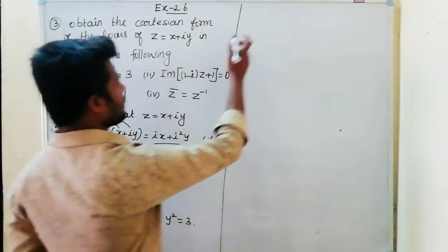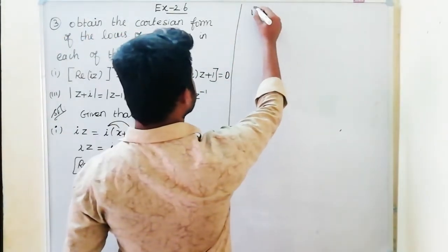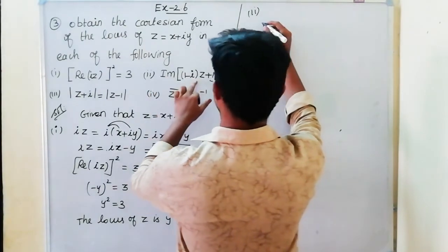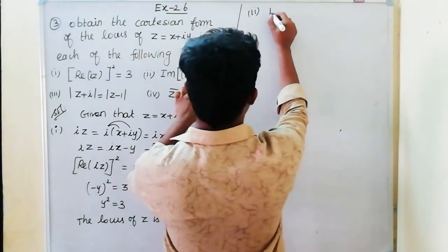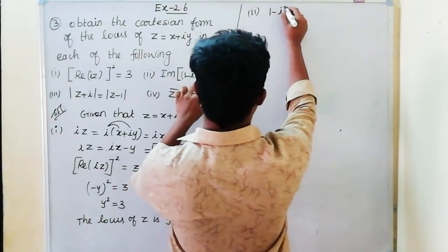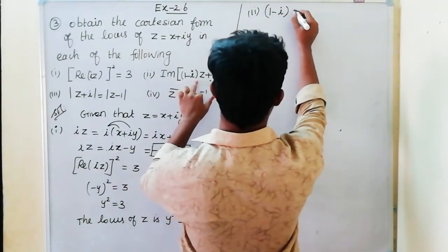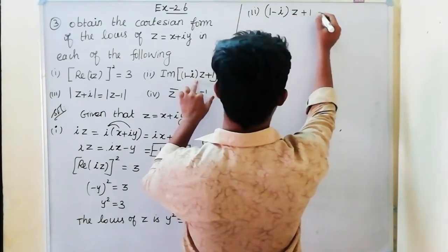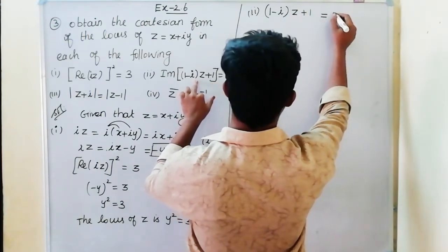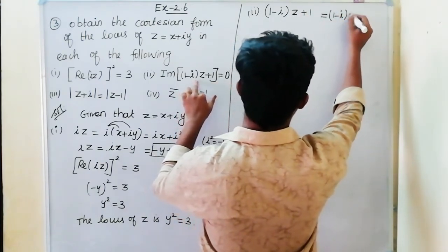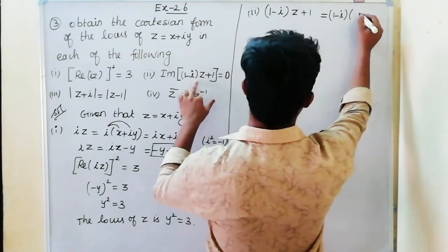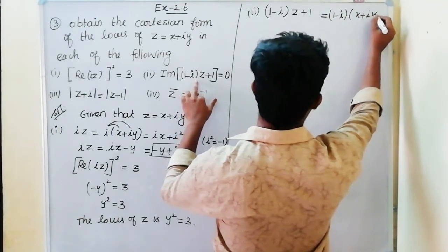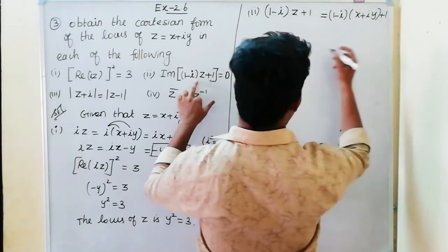Second solution: find the imaginary part. The expression 1 minus i into z plus 1 is equal to 1 minus i into x plus iy plus 1.